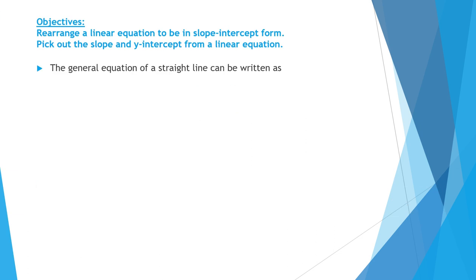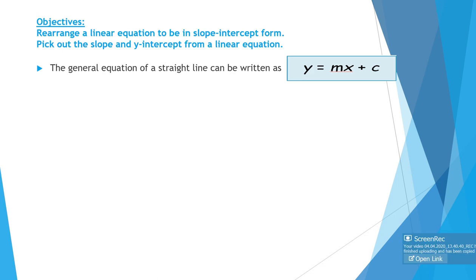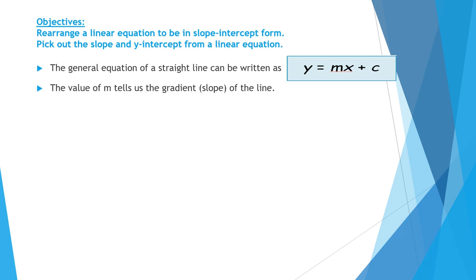The general equation of a straight line can be written as y equals mx plus c. This is just one of the different forms of writing the equation of a line. The value of m tells us the gradient or the slope of the line. So in the equation y equals mx plus c, m is the slope or the gradient of the line.